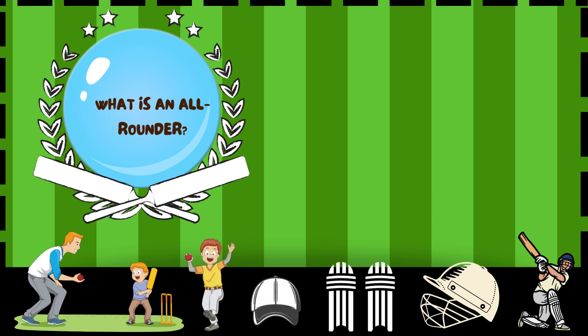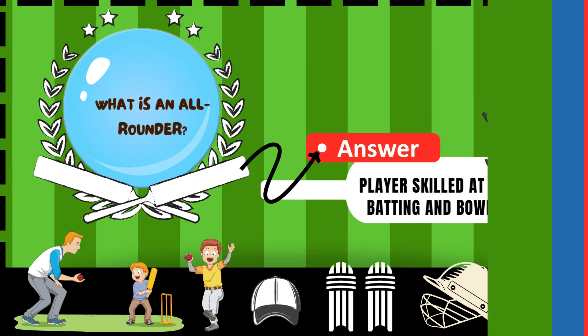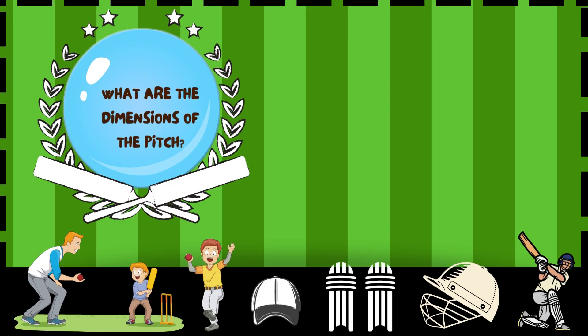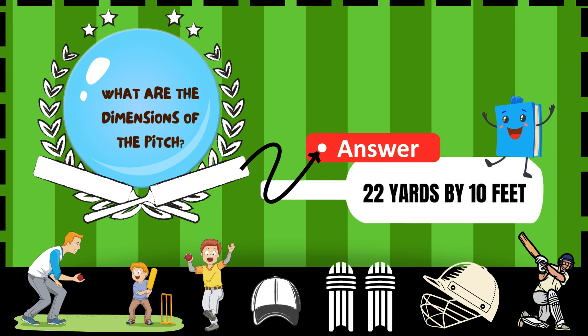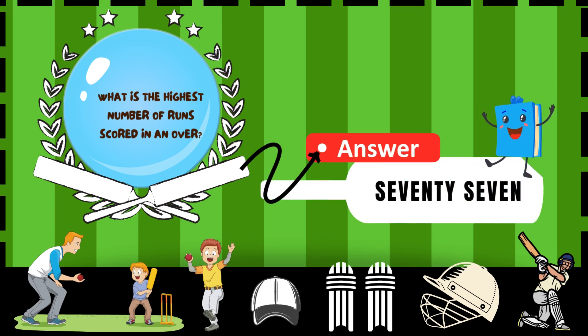What is an all-rounder? A player skilled at both batting and bowling. What are the dimensions of the pitch? 22 yards by 10 feet. What is the highest number of runs scored in an over? 77.